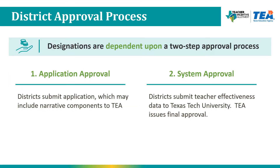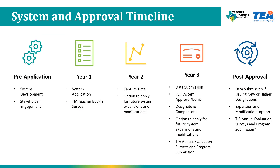Designations are dependent upon a two-step approval process through TEA. In Step 1, districts outline their proposed designation system and submit a system application to TEA; once approved, the district can begin implementing its system. The Step 2 approval requires districts to submit teacher effectiveness data to Texas Tech University before TEA will issue a final approval.